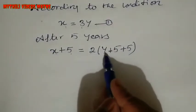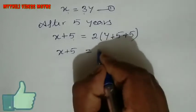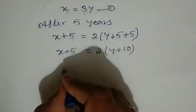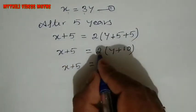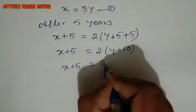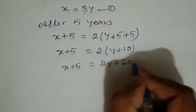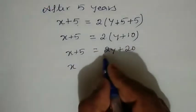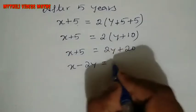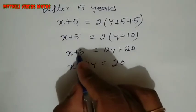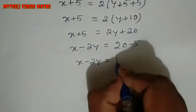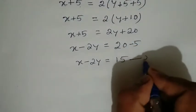So X plus 5 equals 2 into Y plus 5, which is 2Y plus 10. Moving variables to one side and constants to the other: X minus 2Y equals 20 minus 5, which is 15. This is Equation 2.